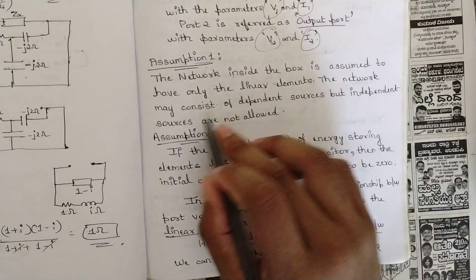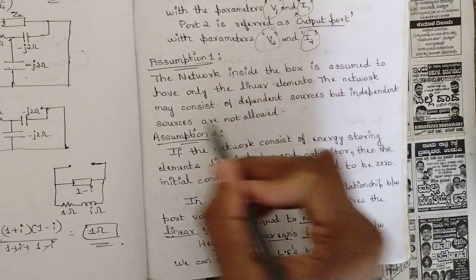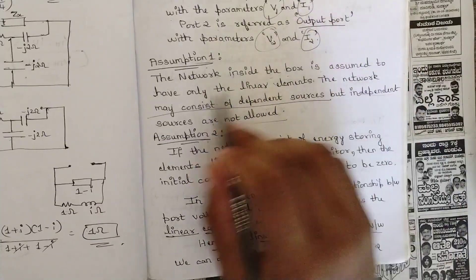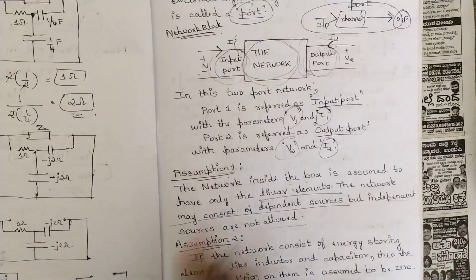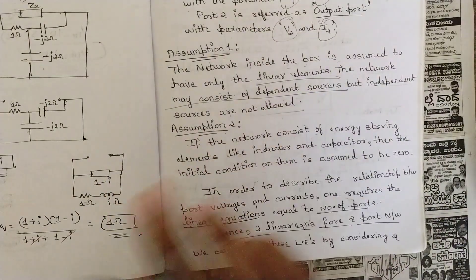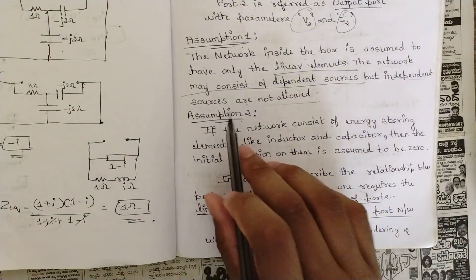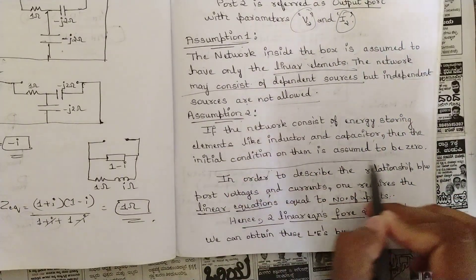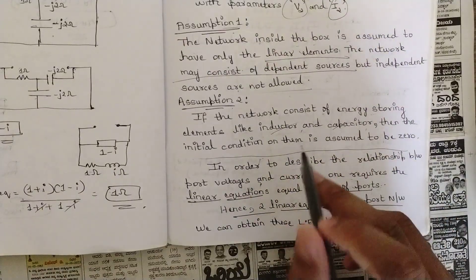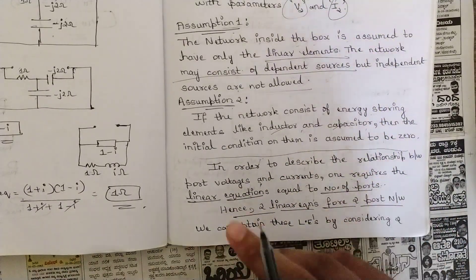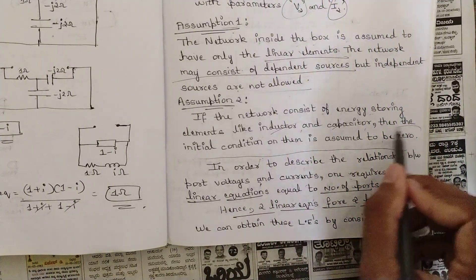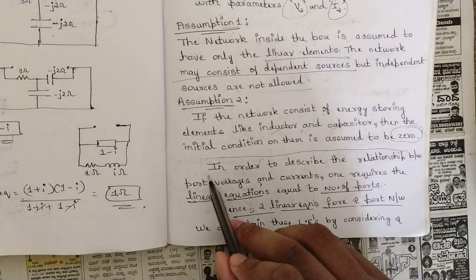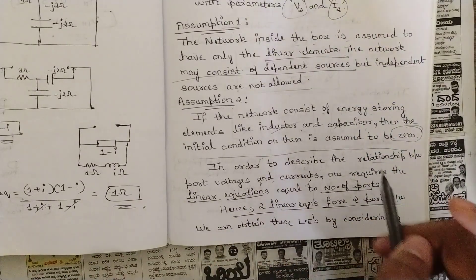Regarding assumptions: first, the network inside the box is assumed to have only linear elements. The network may consist of dependent sources, but independent sources are not allowed. Second, if the network consists of energy-storing elements like inductors and capacitors, the initial conditions on them are assumed to be zero. In most problems we deal with only resistances, so this zero condition is generally satisfied.